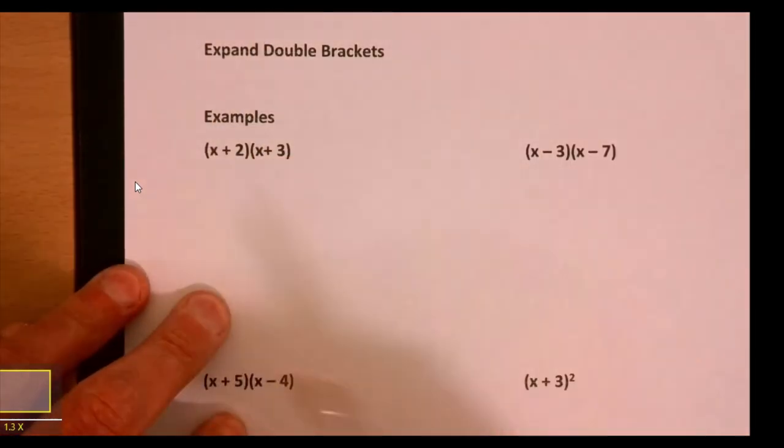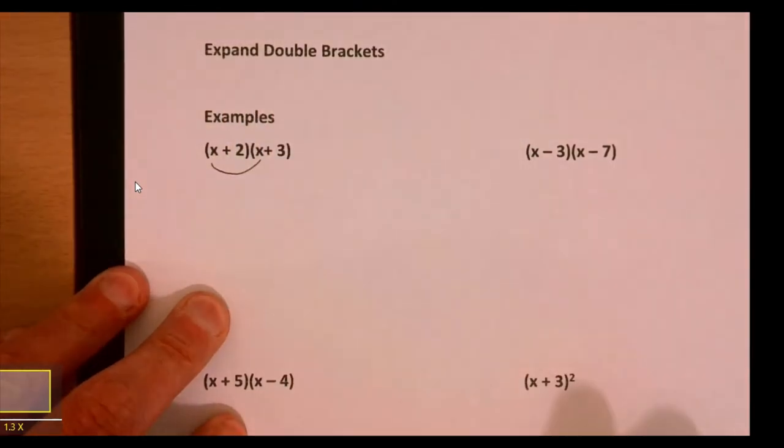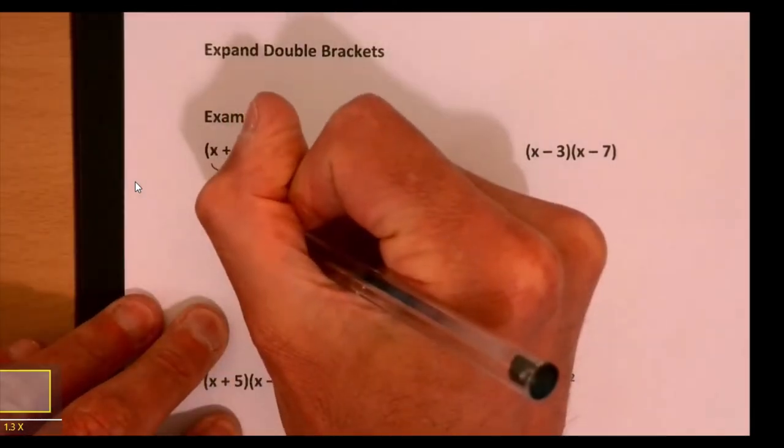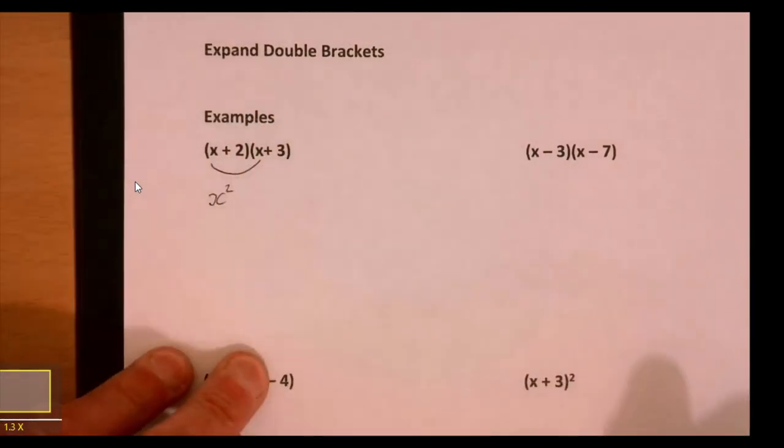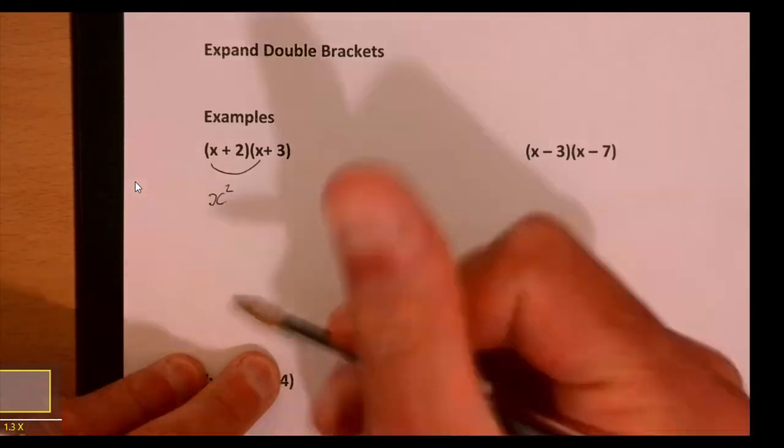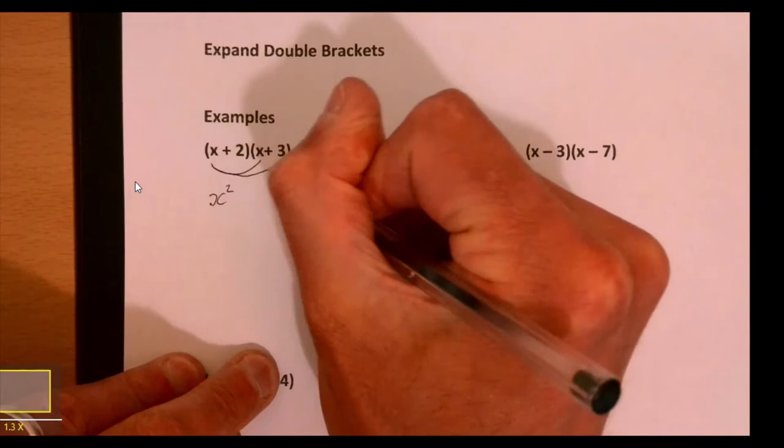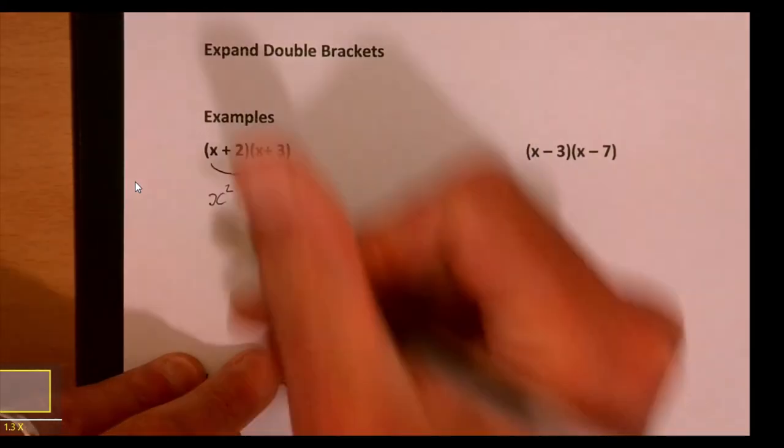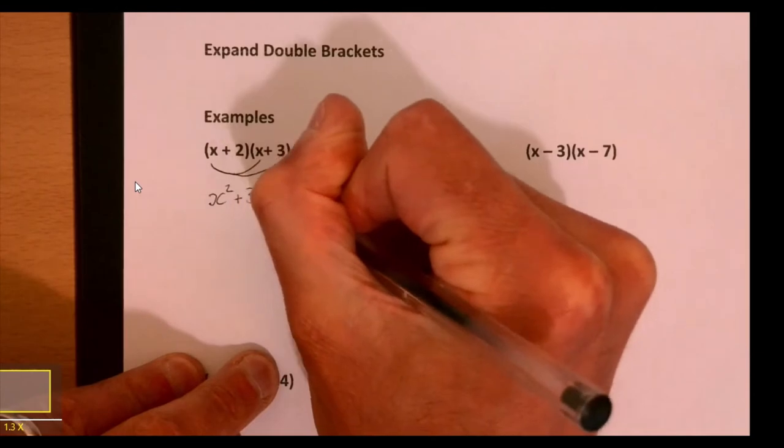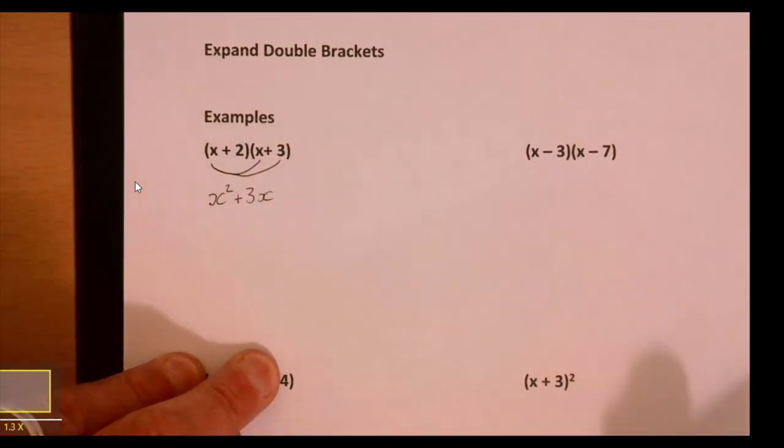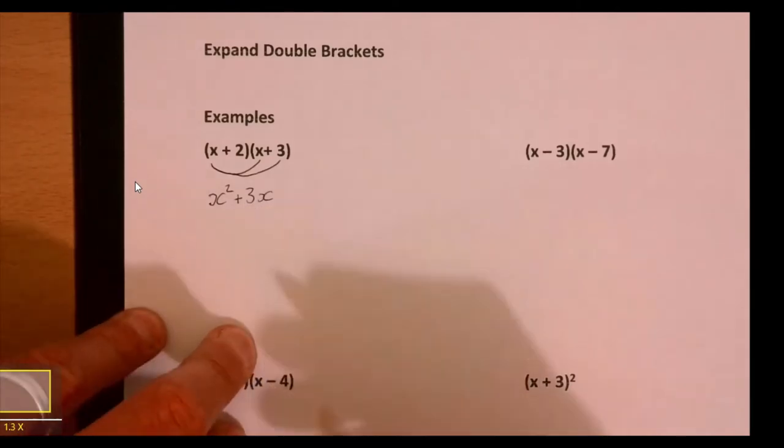I like to draw little connectors. X times x is x squared - you could write xx but that might look like a love letter. Then x times 3 gives us plus 3x. We write the number before the letter, so 3x rather than x3 because x3 sounds like a spaceship.